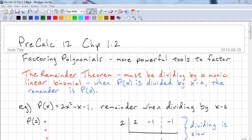This is Precalc 12, Chapter 1.2. We're going to look at factoring polynomials using more powerful tools. First tool is the Remainder Theorem. For the Remainder Theorem we must be dividing by a monic linear binomial. So if we have P(x) divided by x minus a, the remainder is P(a).